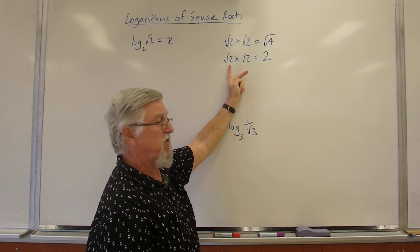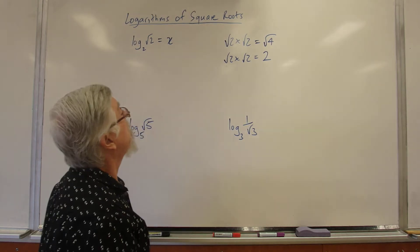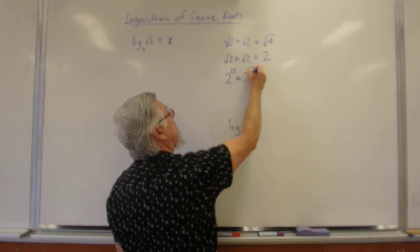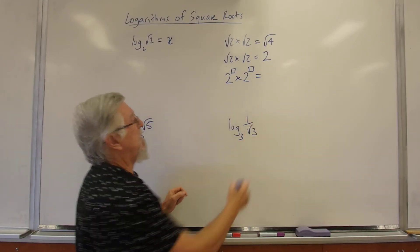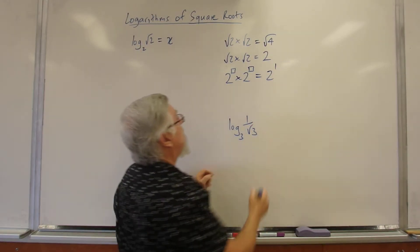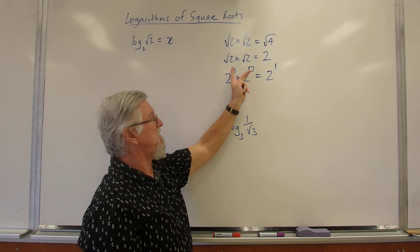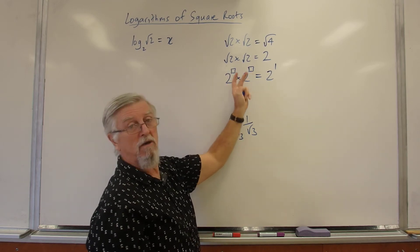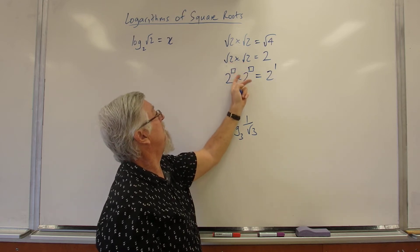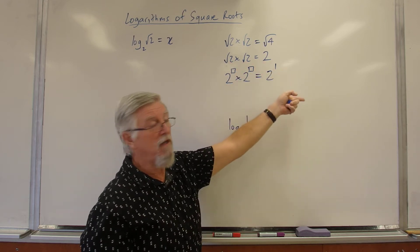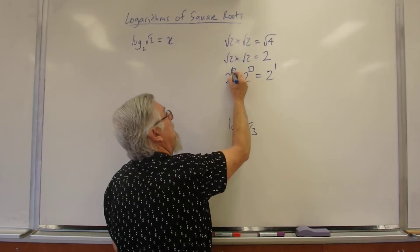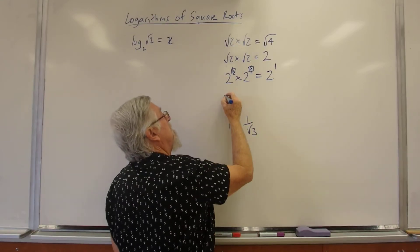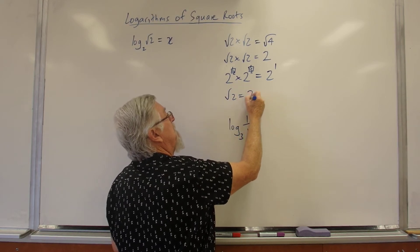Now if I write that as 2 to the power, multiplied by 2 to another power, I end up with 2 to the 1. So what you do with the powers or the indices when you're multiplying, if the bases are the same, we add the powers. So what number plus itself would give us 1? And obviously that's going to be a half. So we now know that the square root of 2 can be written as 2 to the half.